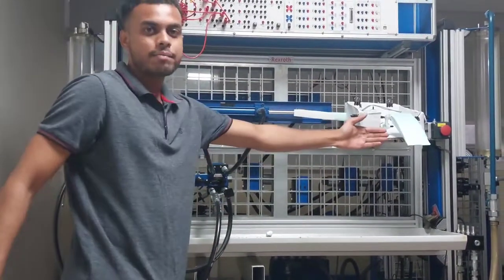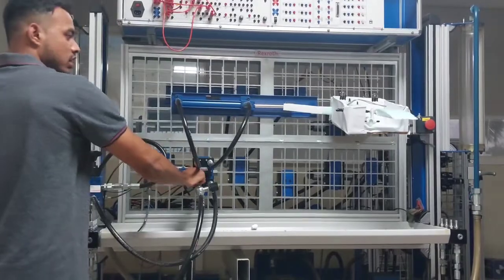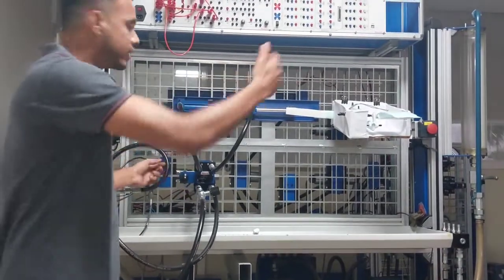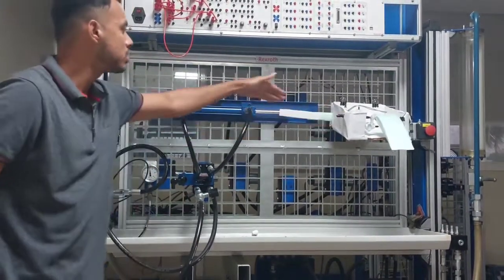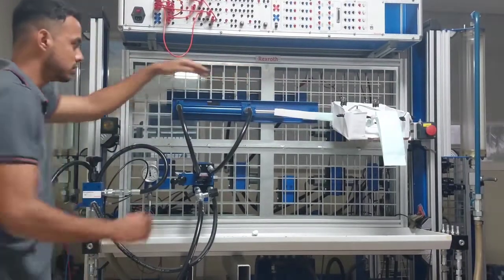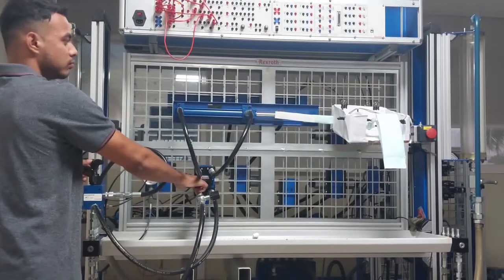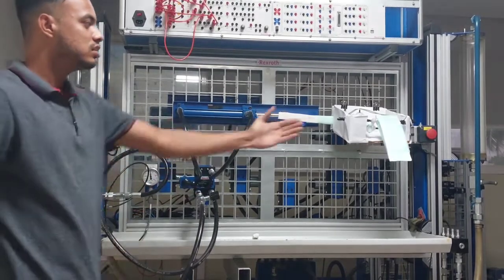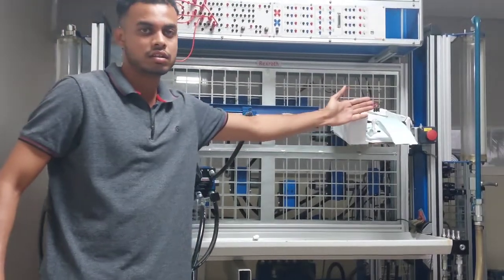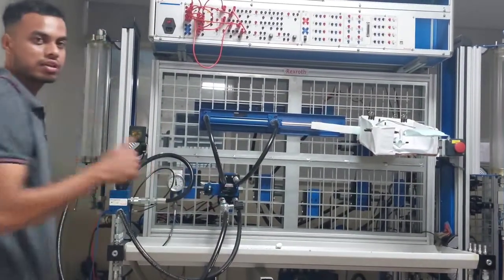You can see the flap is going upward. Now I will stop and reverse it. You can see the flap actuation and the piston movement here. And again I will operate. You can see the flap is rising. I will stop it.